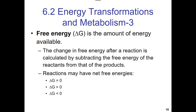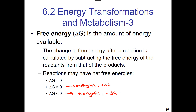From the mathematics: if delta G equals zero, the reaction is neither spontaneous nor non-spontaneous — it's neutral. If delta G is greater than zero, we've gained energy, so that's an endergonic reaction. If delta G is negative, the energy is leaving the system — that's an exergonic reaction.